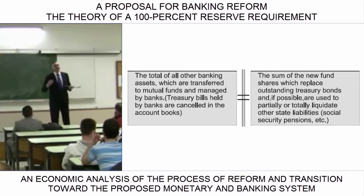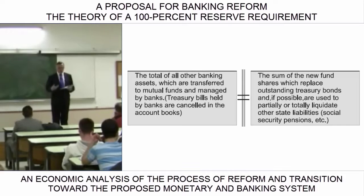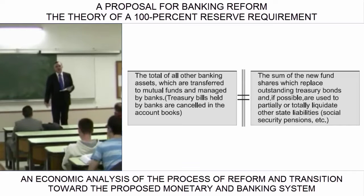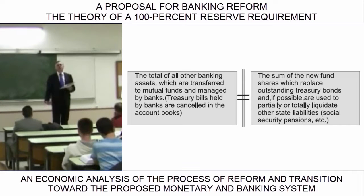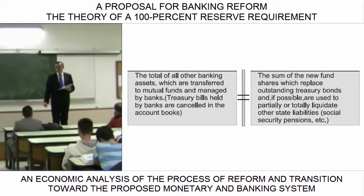And who would own the shares? The holders of government bonds issued by all nations. The holders of these bonds would exchange them for the new shares. According to my estimates, there would be enough to repay all the national debt issued by Spain and practically every country, and there would even be money left over to liquidate other government liabilities, the largest of which are connected with the social security system.